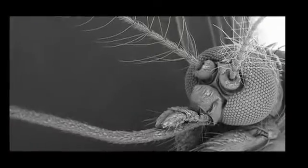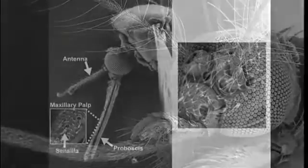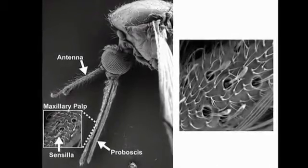Most insects, including disease-carrying insects, find their hosts like human beings or plants using the sense of smell. So one of the main aspects of our research is trying to not only understand how the insect can detect odors from a human being and find the human being, but also how we can disrupt this pathway.